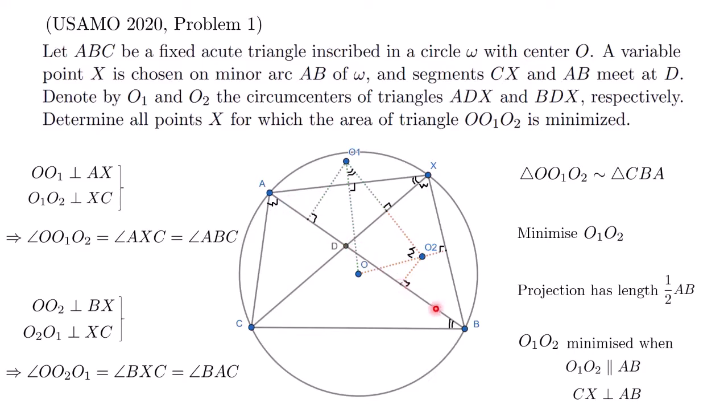And there you have it. The required condition for X is CX perpendicular to AB. This is quite an interesting problem because it involves a number of different ideas beyond just basic angle chasing. And in future videos, I'll be covering some of the other interesting problems in this year's USAMO as well. Do comment in the comment section below what is your favorite problem from this year's test. And stay tuned. See you soon.